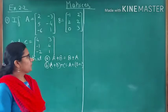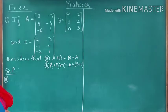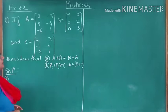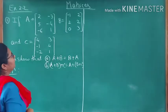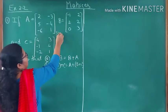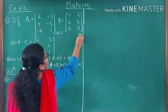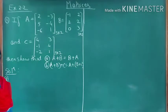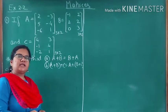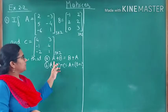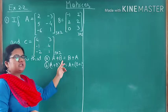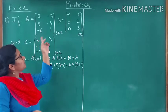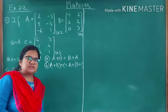Let us start with the first example. In the first example, A, B, and C are three matrices of order three by two, three by two, and three by two. We have also seen the properties of matrix addition — commutative and associative — and we have to prove these two properties using these three matrices.